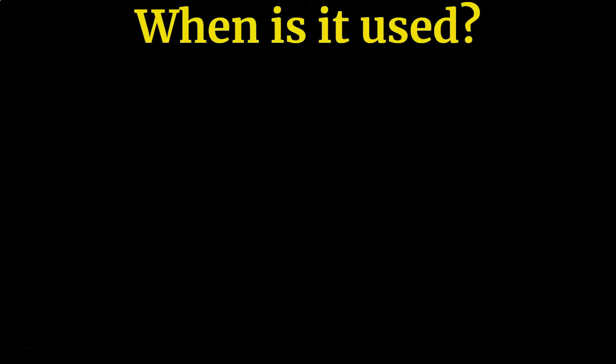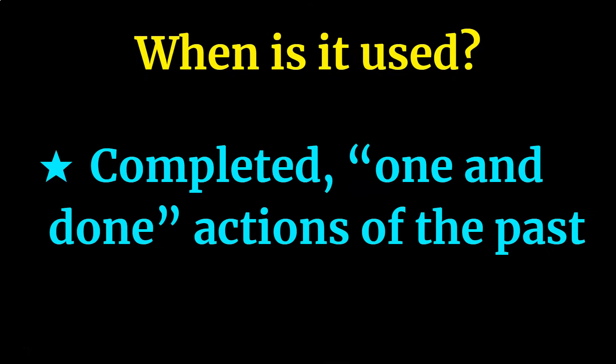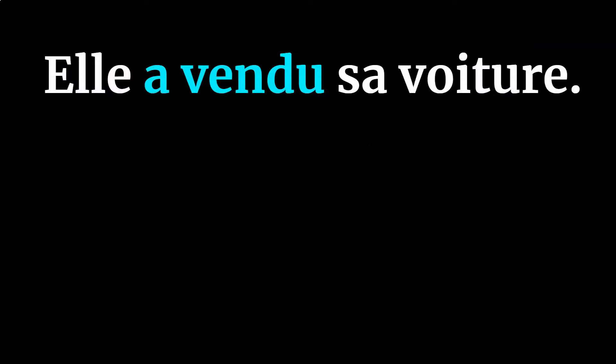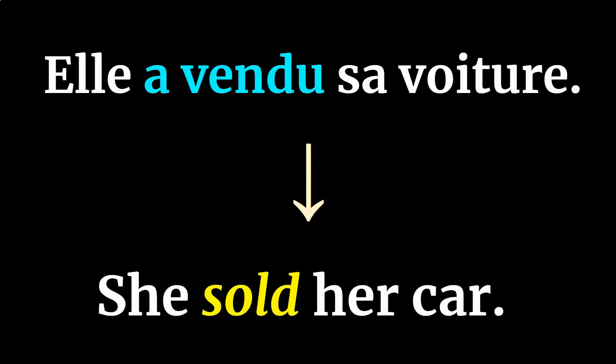So when is it used? Le passé composé is used when referring to completed, one-and-done type actions of the past. For example, elle a vendu sa voiture, meaning she sold her car.